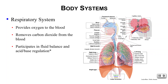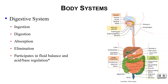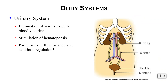Your respiratory system provides oxygen to the blood, removes carbon dioxide from the blood, and participates in fluid balance and acid-base regulation. Your digestive system is involved in ingestion, digestion, absorption, and elimination, and also participates in fluid balance and acid-base regulation. Your urinary system is involved in the elimination of wastes via urine, stimulates hematopoiesis, and yet again participates in fluid balance and acid-base regulation — notice multiple body systems are involved in this, so it must be quite important.